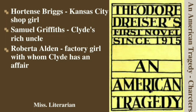Wilred Spanser is a friend of Oscar Hegland. Samuel Griffiths is Clyde's rich uncle who gives him a job in his shirt and collar factory in Lycurgus, New York.